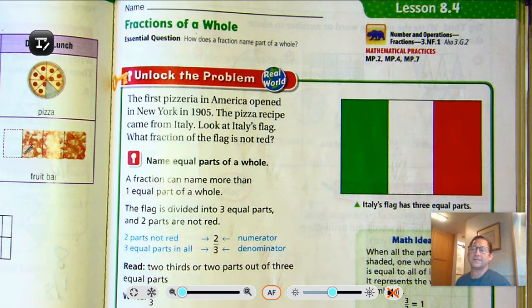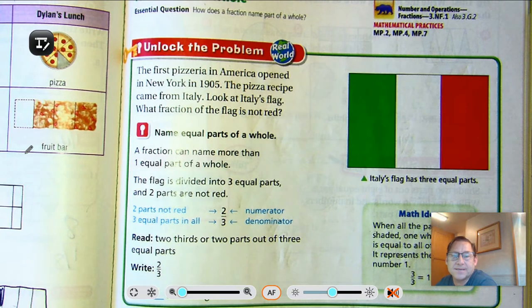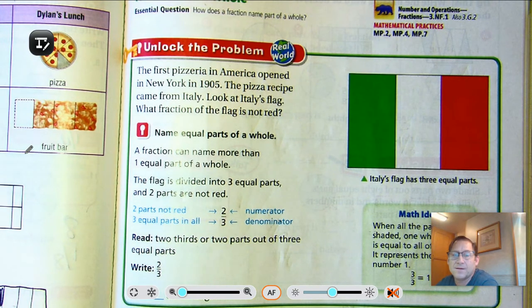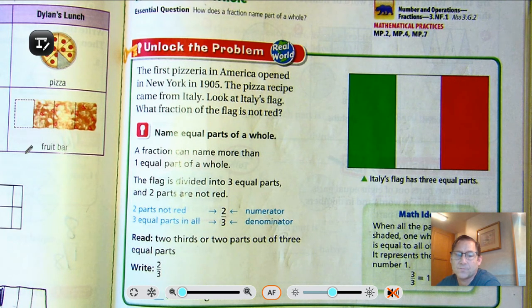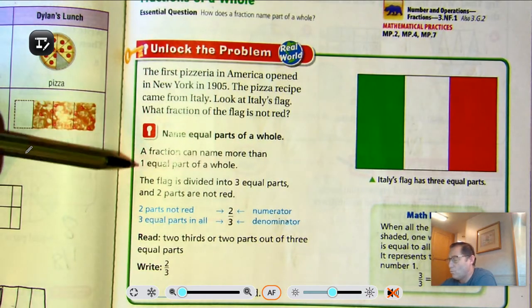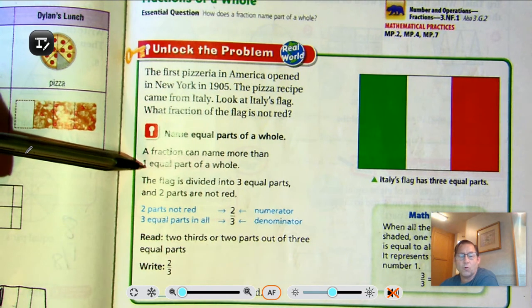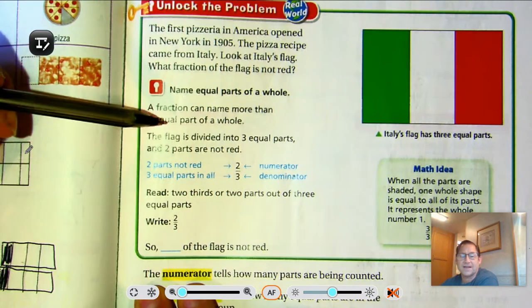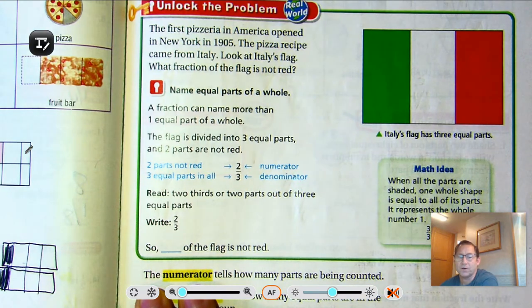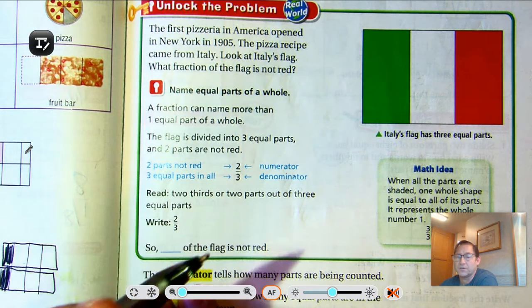Let's look at the Unlock the Problem. The first pizzeria in America opened in New York in 1905. The pizza recipe came from Italy. Look at Italy's flag — what fraction of the flag is not red? So we can name equal parts of a whole. A fraction can name more than one equal part of a whole. The flag is divided into three equal parts, and two parts are not red.